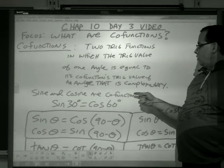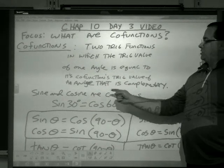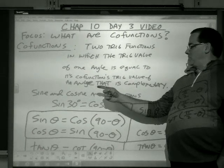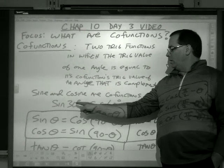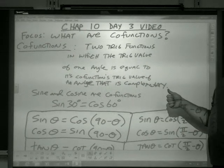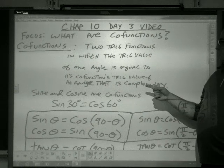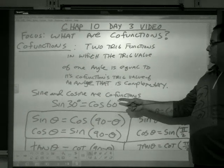So for example, sine and cosine are co-functions, because the sine of 30 is the same as the cosine of 60. 60 and 30 are complementary. They add up to 90. So sine and cos are co-functions because this is true.